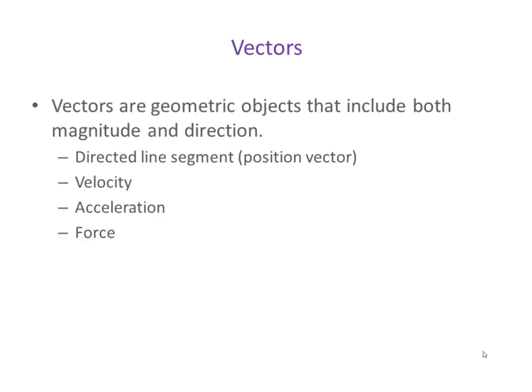Now vectors, on the other hand, are geometric objects that include both magnitude and direction. Vectors can be used as directed line segments. Directed line segments would be something that is used perhaps as a position vector, where we put the tail of a vector on the origin, and the point of the vector is located at whatever point of reference we have. It could be a directed line segment between two points, in which case we'd refer to it as a displacement vector.